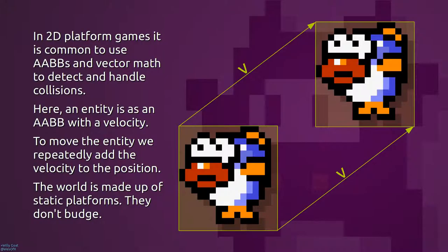In 2D games it is common to use bounding boxes and vector math to detect and handle collisions. An entity will be a bounding box and a velocity.